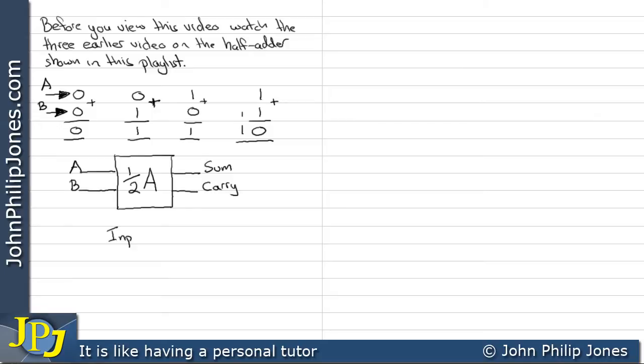We can now produce a truth table for the half adder which takes A and B as the inputs and the outputs will be the sum and the carry. And these are the various input combinations for A and B.